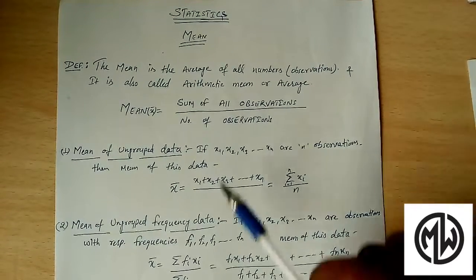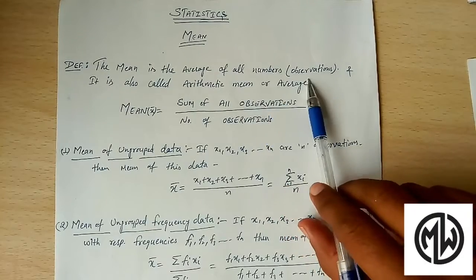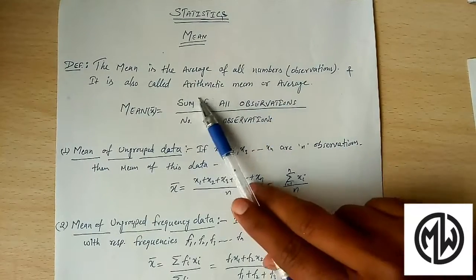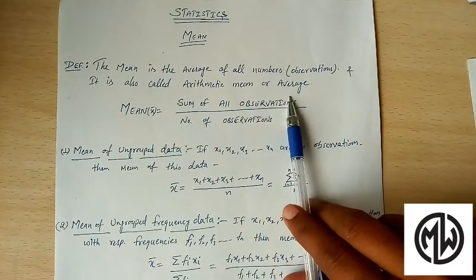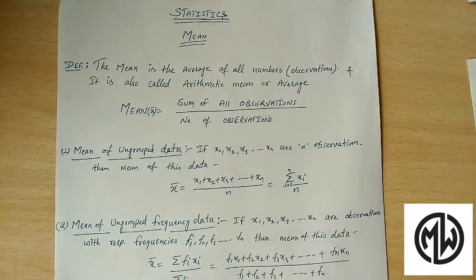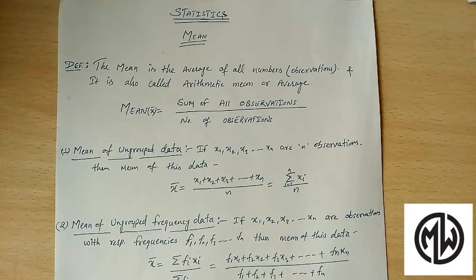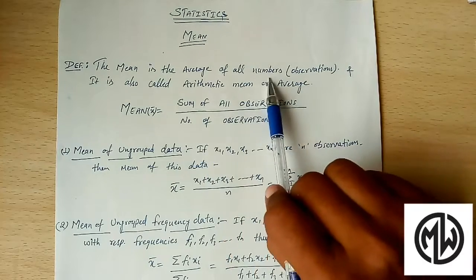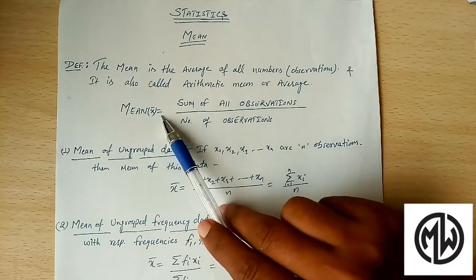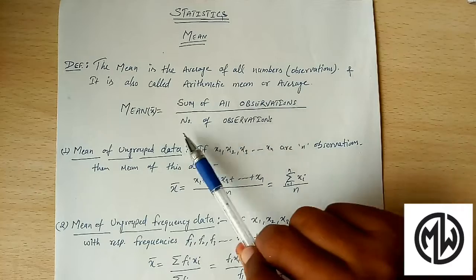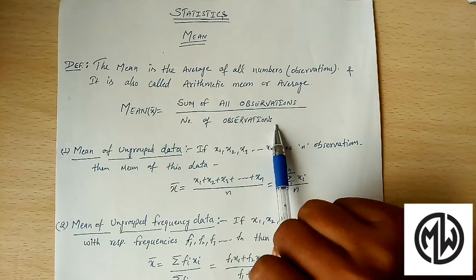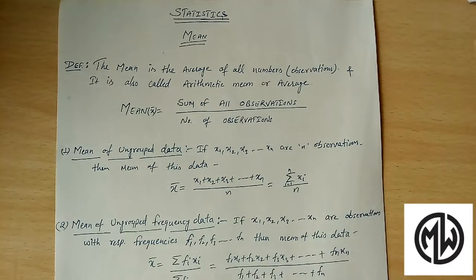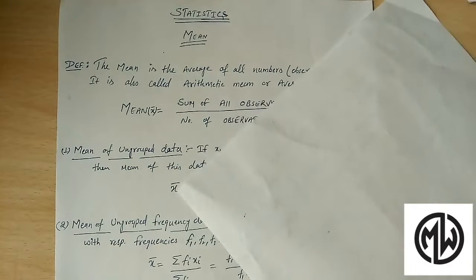Mean is the average of all numbers or observations. It is also called the arithmetic mean of all observations. Average is the sum of all numbers divided by the total count of numbers. Similarly, the mean of some observations is also the sum of observations divided by the number of all observations.